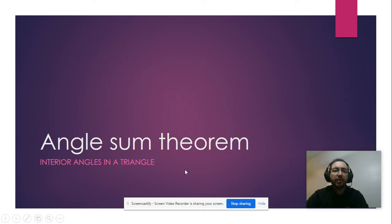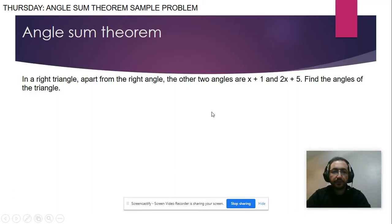Okay, let's talk about angle sum theorem. They talk about the interior angles in a triangle. We got this example: In a right triangle, apart from the right angle, the other two angles are x plus 1 and 2x plus 5. Find the angles of the triangle.